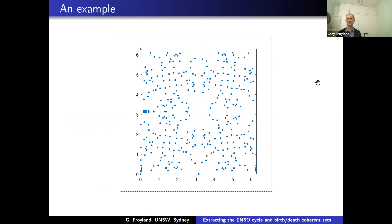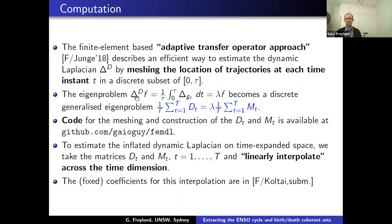The inflated dynamical Laplacian on time-expanded space requires only linearly interpolating the stiffness and mass matrices across the time dimension, with coefficients that are fixed numbers derived in the paper. The code for meshing is available at Oliver Junger's GitHub site.